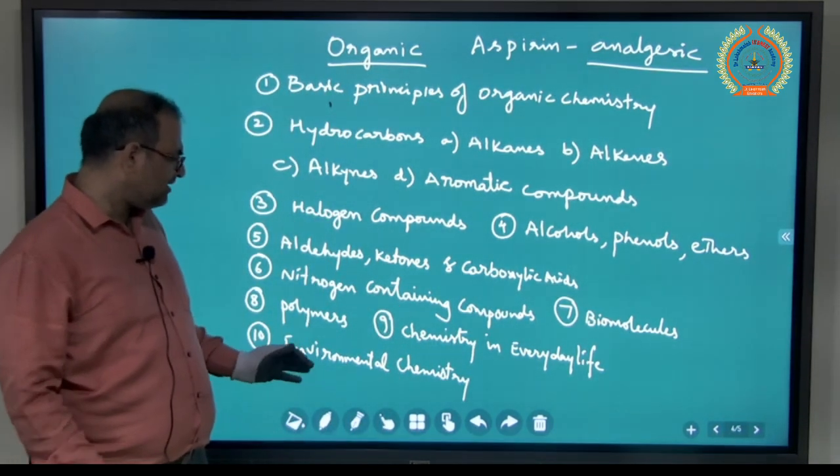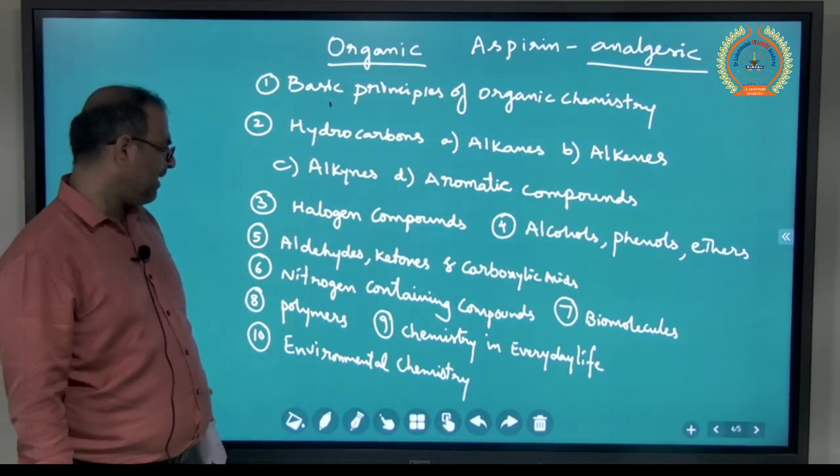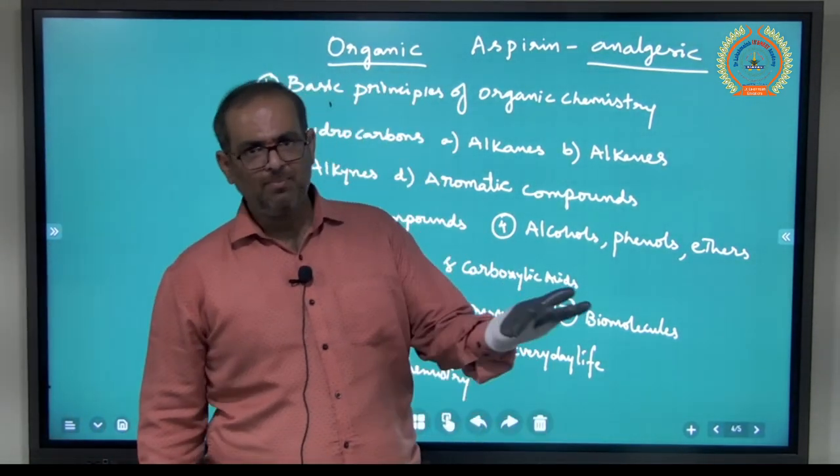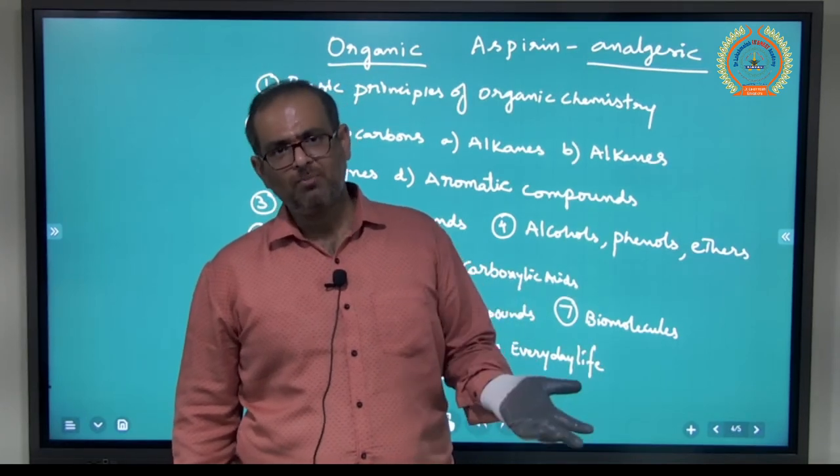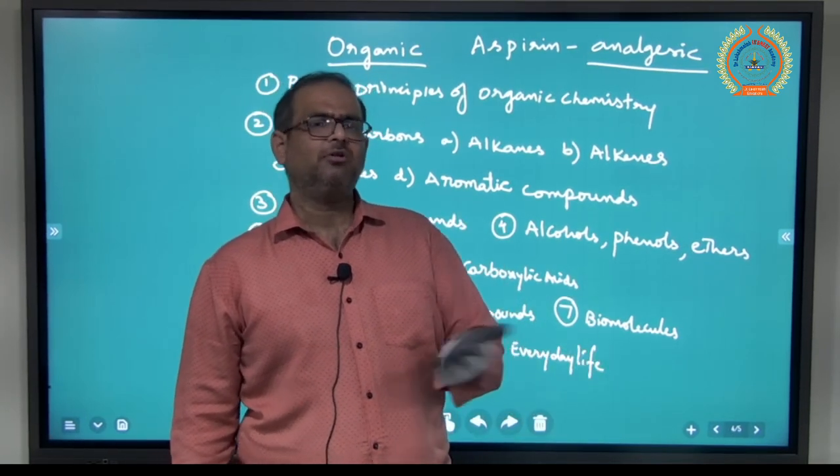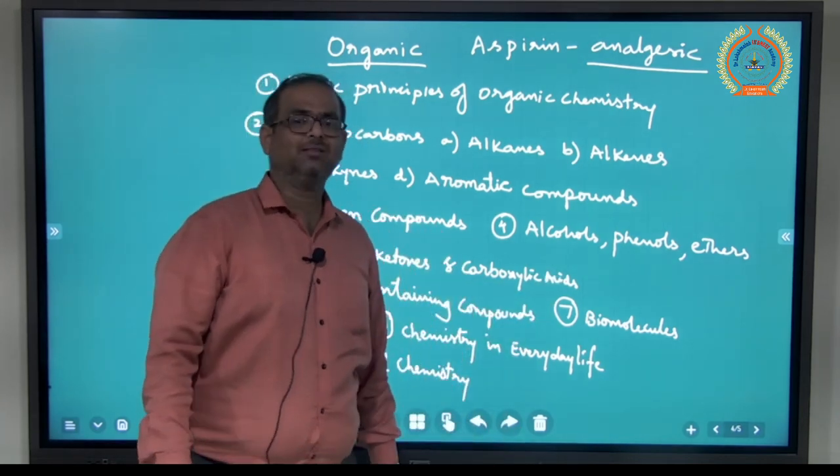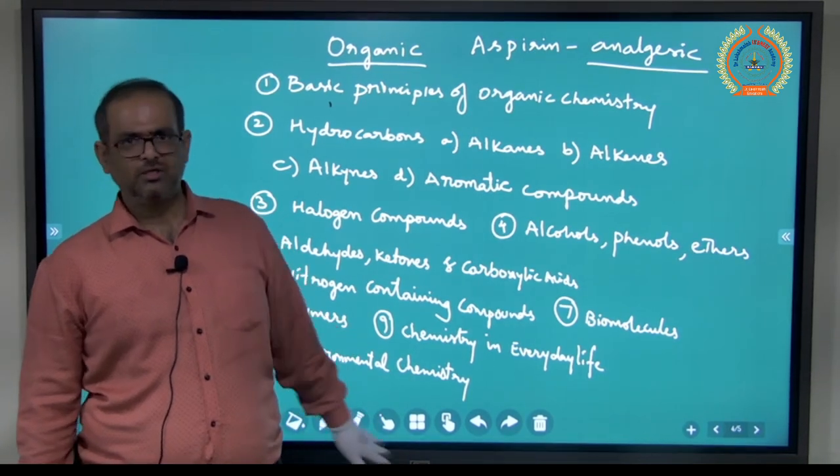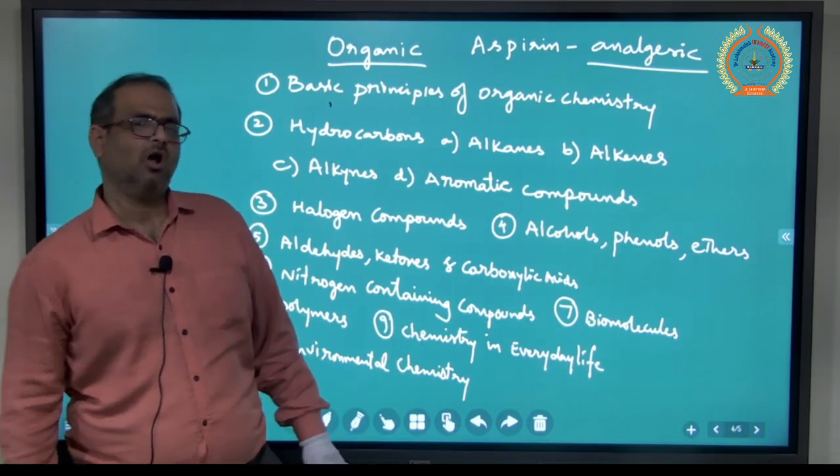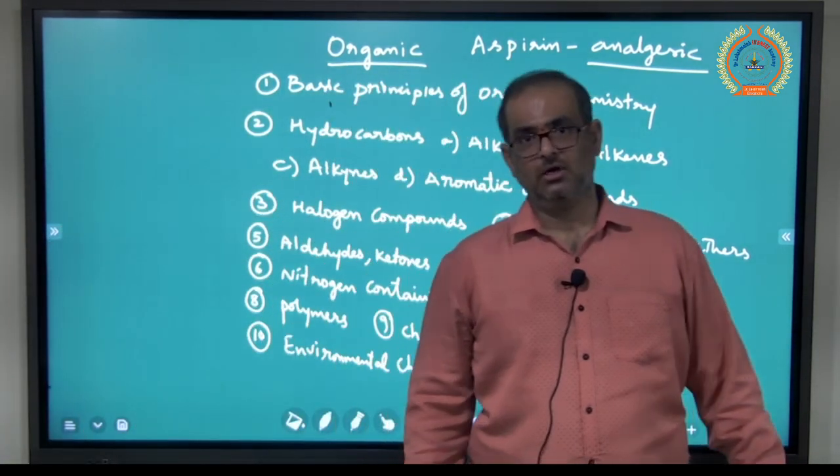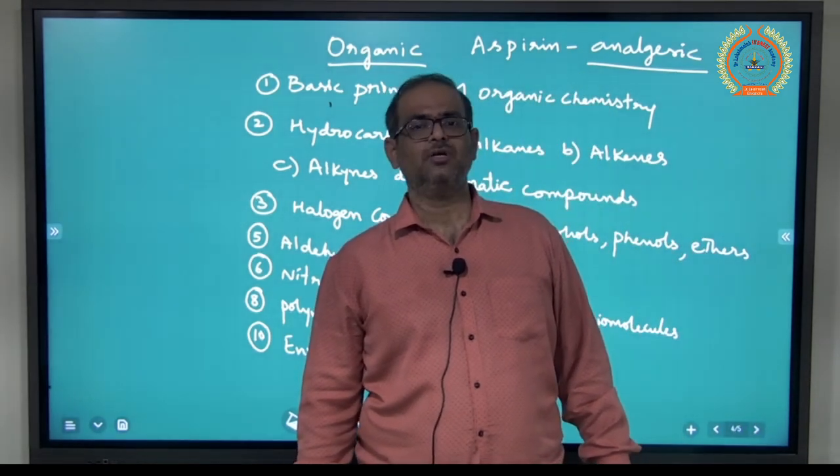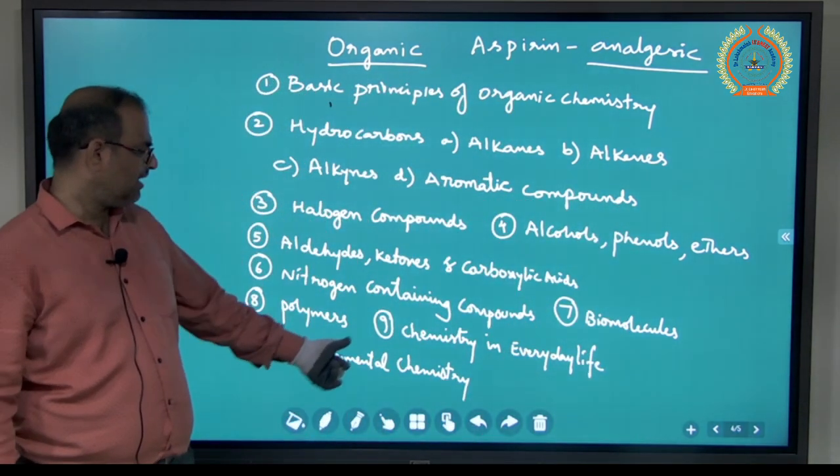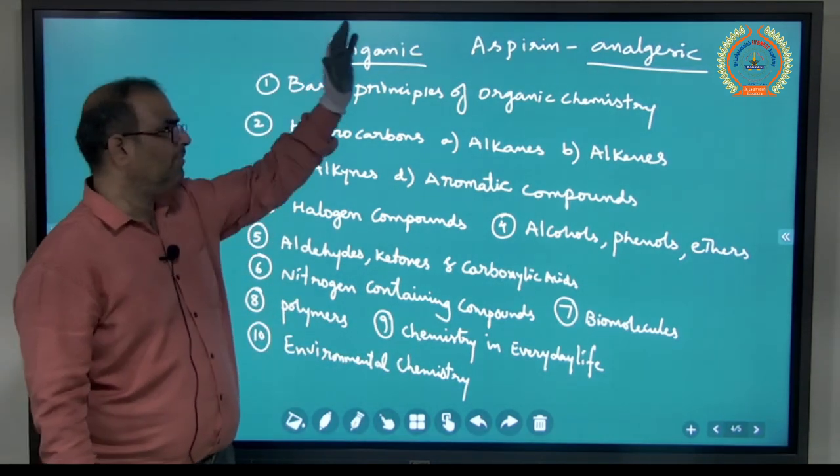Environmental chemistry. This is actually a separate topic. Environmental pollution in fact you can say. Soil pollution, air pollution, water pollution, sound pollution. What are the reasons for pollution? How to prevent pollution? What are the effects of pollution? Along with that, we will also talk about global warming, greenhouse effect, ozone layer depletion, acid rain. All these terms which are general topics, we will cover under environmental chemistry.